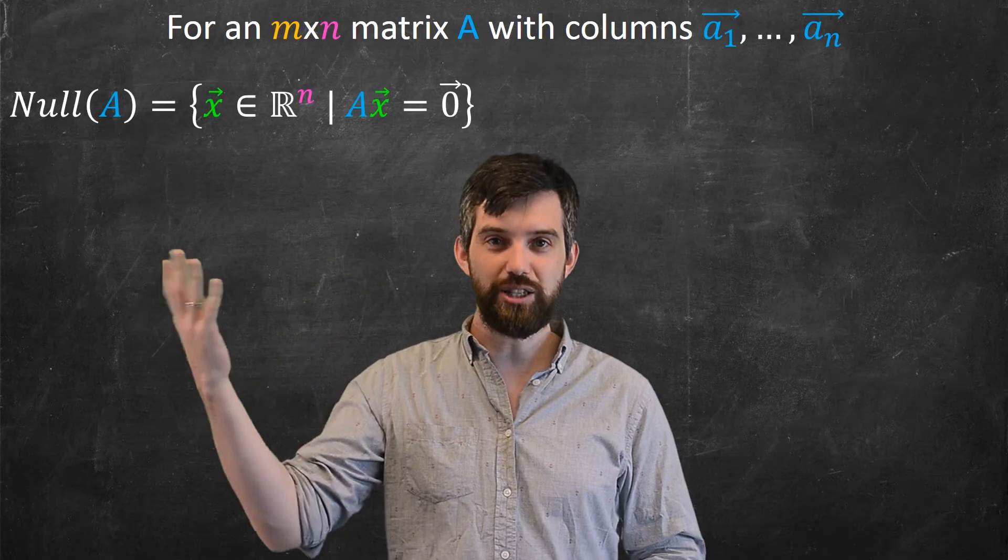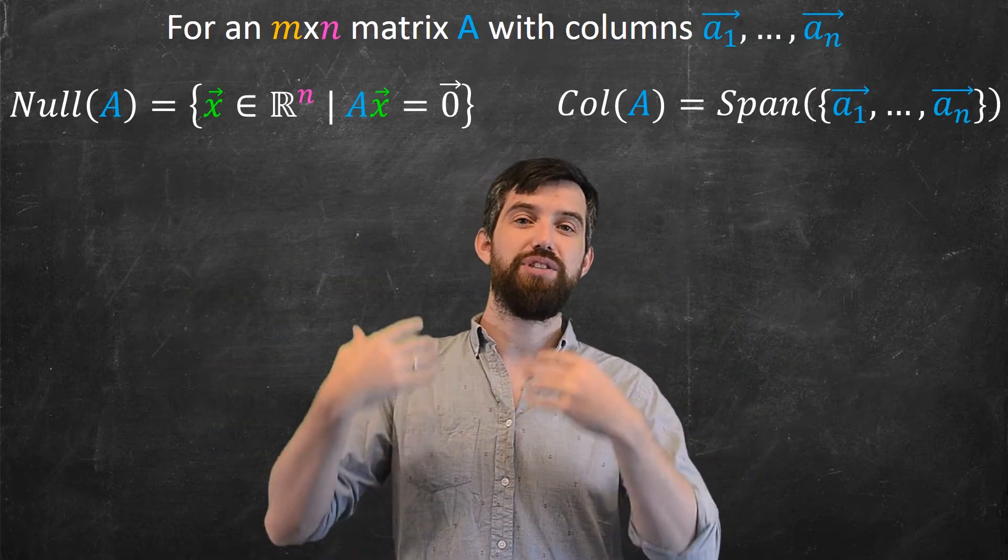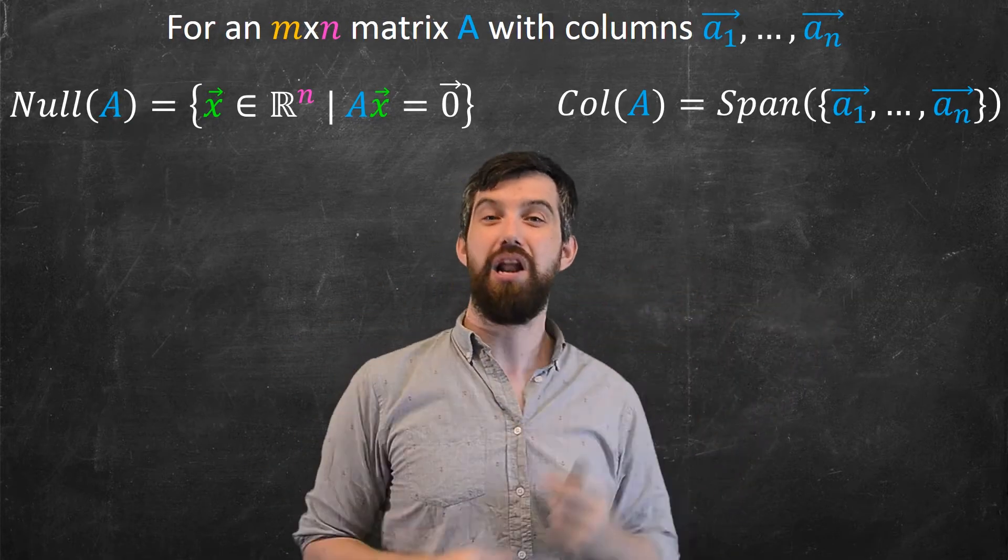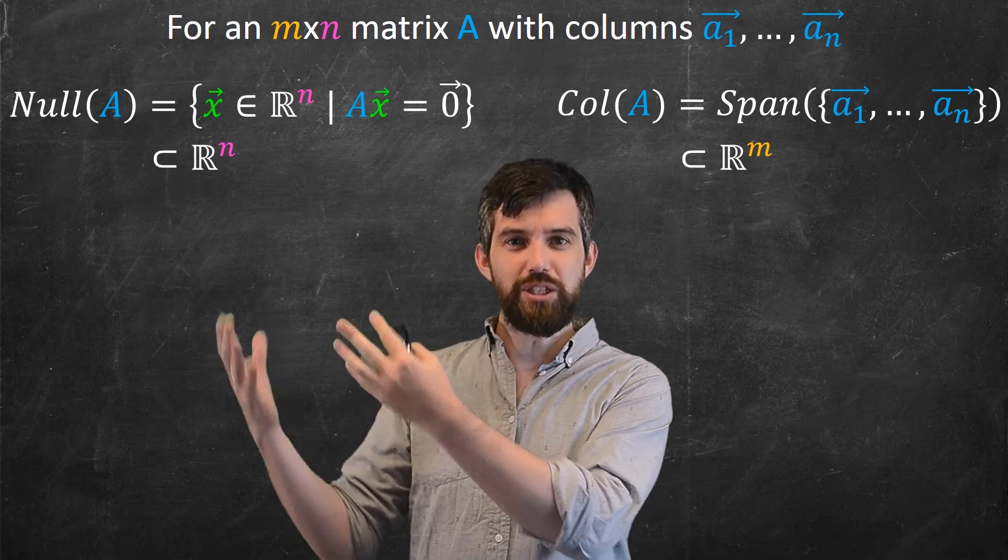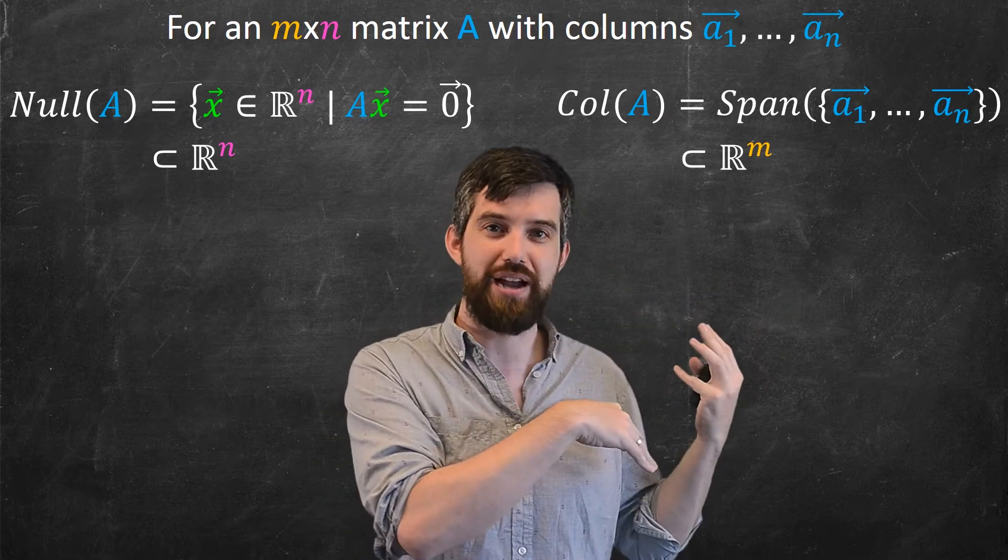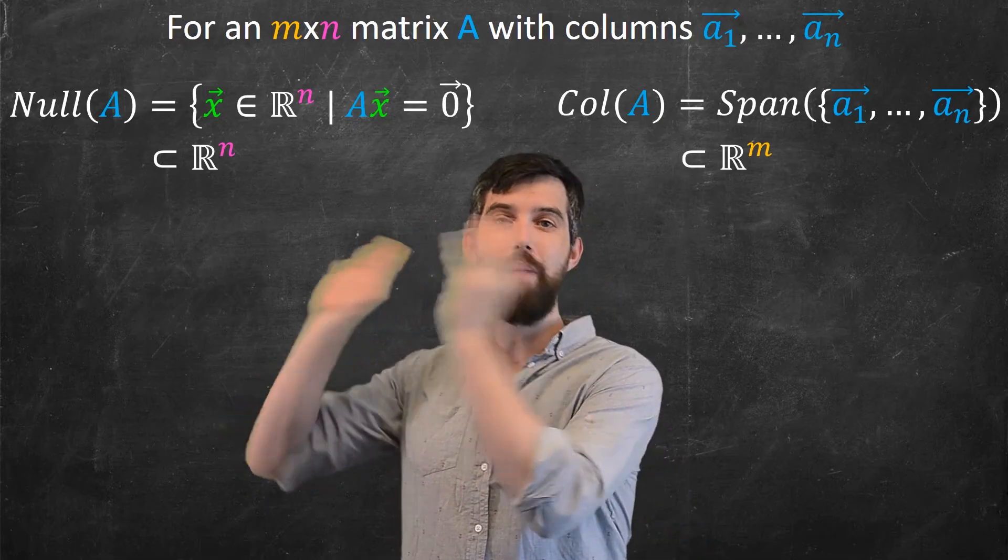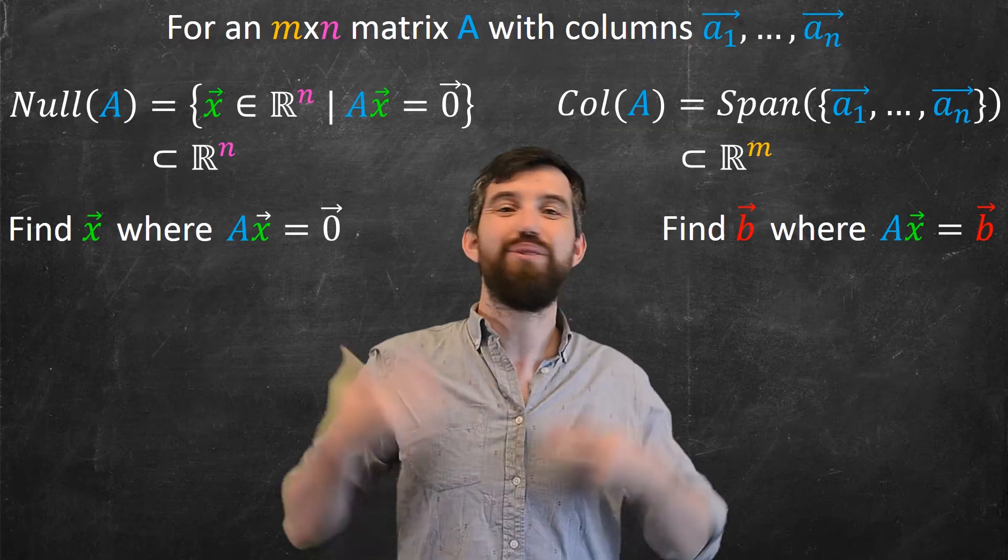So let's compare the two. I've got my matrix, it's m by n, and I've got the two different things. I've got the null space, and I've got the column space. The null space is defined to be the vectors that are killed off, where Ax is equal to zero. And the column space is defined to be the span of the columns of A. Now, these vectors live in different places. The null space is the input vectors, it's the ℝⁿ. Well, the column space is the output vectors, it's the ℝᵐ. As in, the null space is in the domain, and the column space is in the codomain.